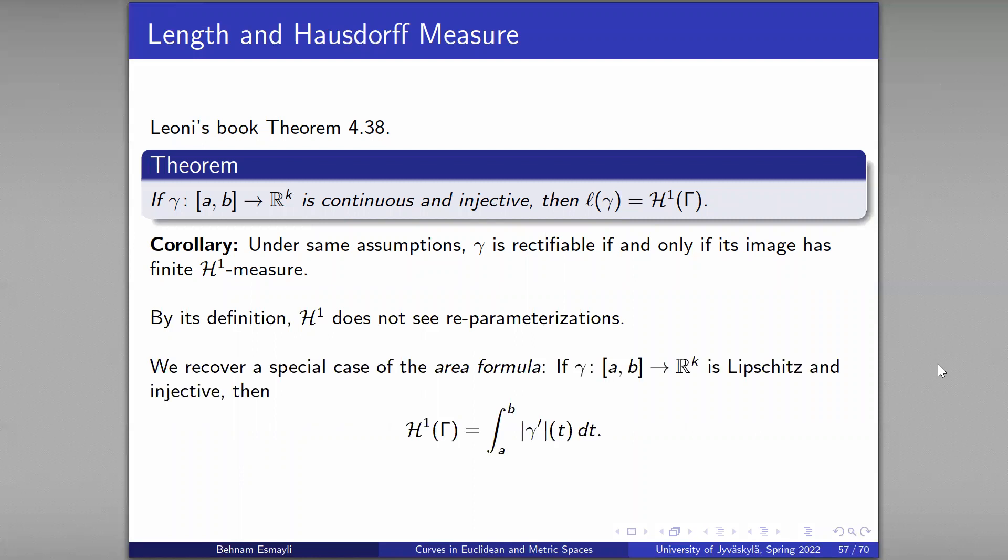And remember we had the formula for the length, the speed formula. If you are now Lipschitz and injective, we know that this quantity here equals L of gamma. And because it is injective, from the theorem above we see that these are equal, therefore we get this equality.